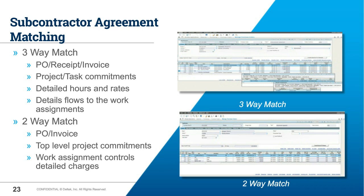Both two-way and three-way match are completely optional and give you flexibility on how you set up your subcontractor agreements. For a three-way match, a lot of details flow directly into a work assignment. For a two-way match, there's less data on the purchase order and more information is assigned at the work assignment level. Both are acceptable and give a lot of flexibility on how you want to set up your subcontractor agreements.